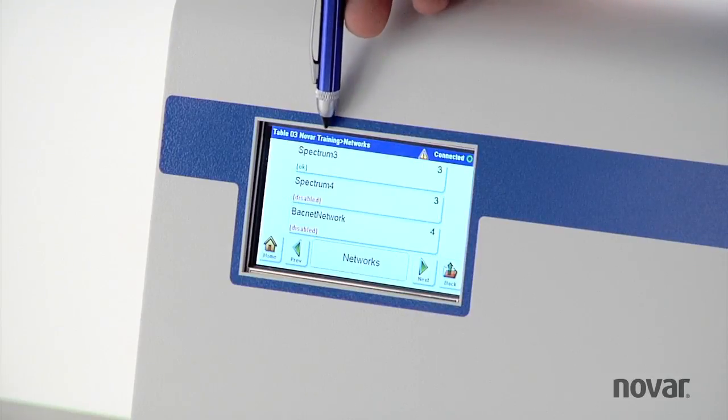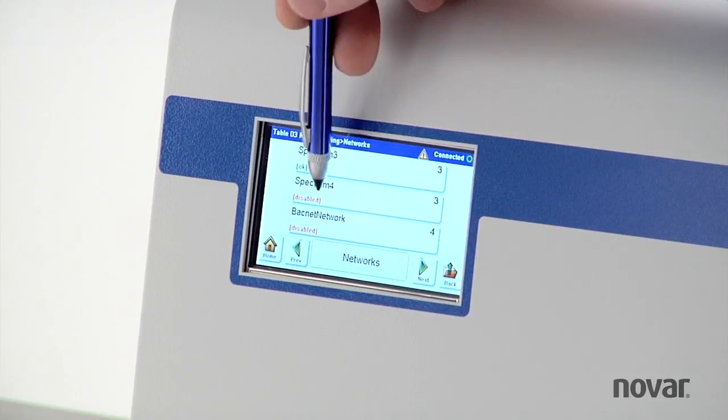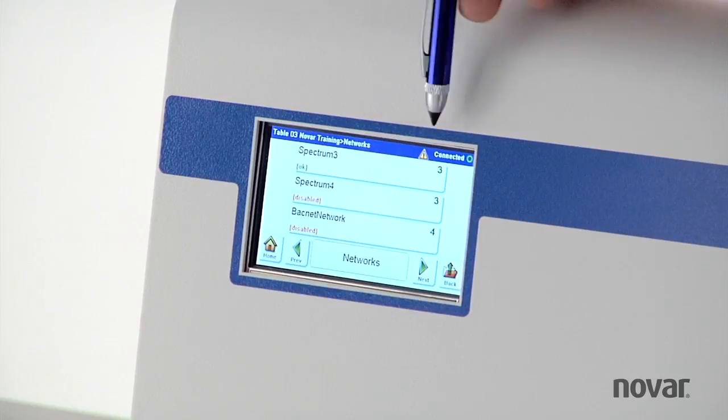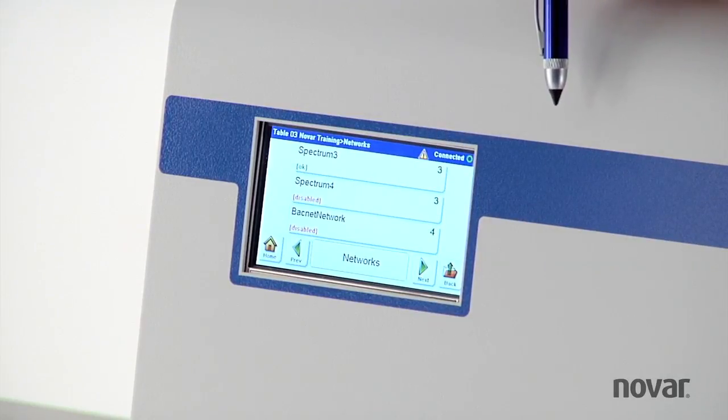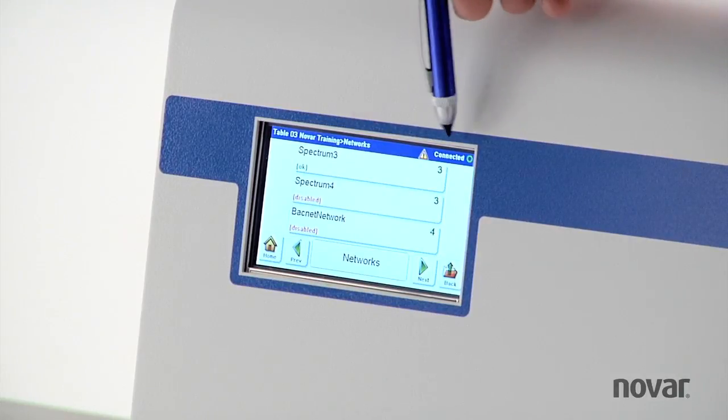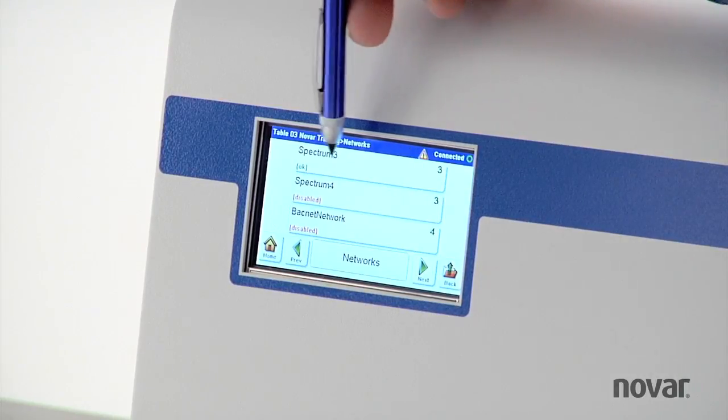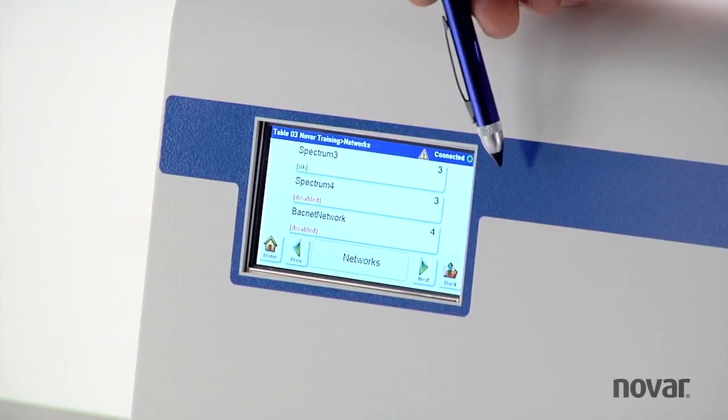This one has three networks: a Spectrum 3, a Spectrum 4, and a BACnet network. On the far right hand side it tells you how many modules are on that corresponding network. In this case, Spectrum 3 has three modules, Spectrum 4 also has three modules.